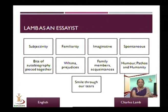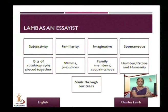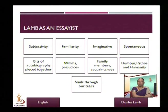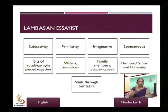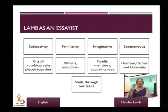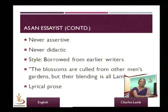To summarize the characteristics: subjectivity, familiarity, imaginative, and spontaneous. Wordsworth described poetry as a spontaneous overflow — and similarly in Lamb's essays, he is not artificially planning what to say next. It comes spontaneously because he is talking informally. It is an informal chat between the reader and the writer, and that is why there is a spontaneity in all his writing.